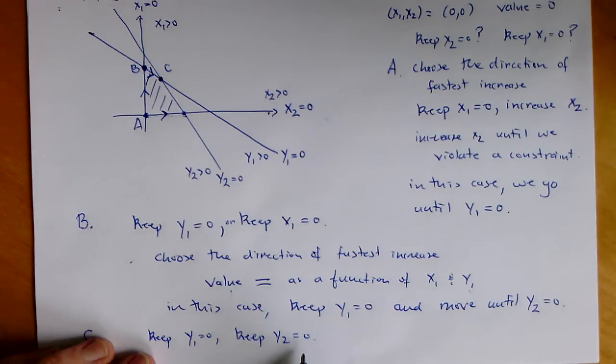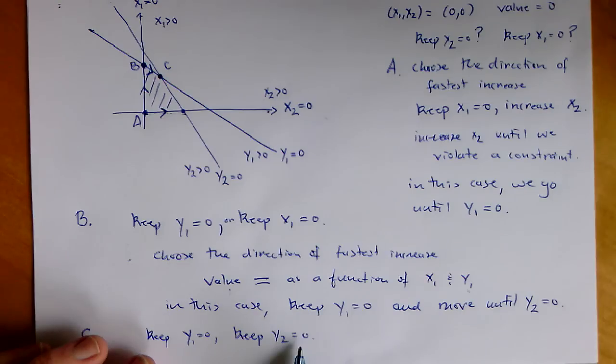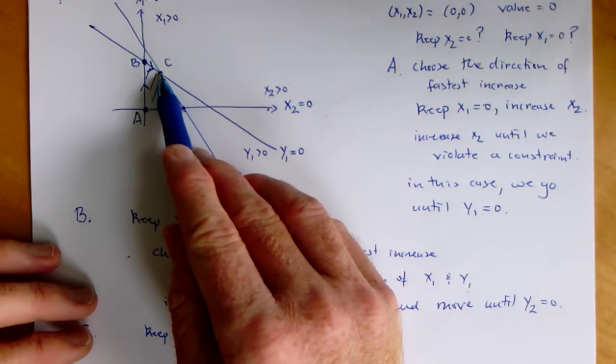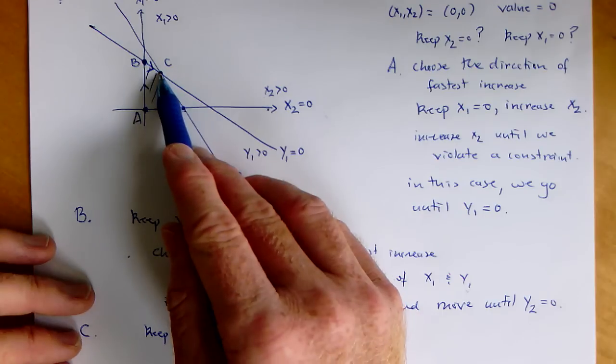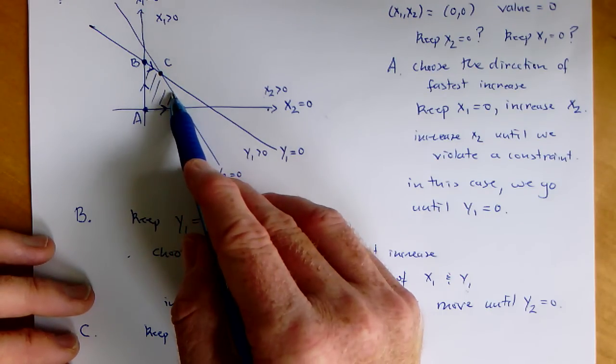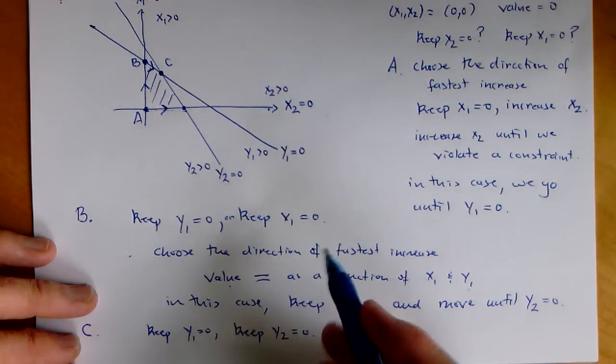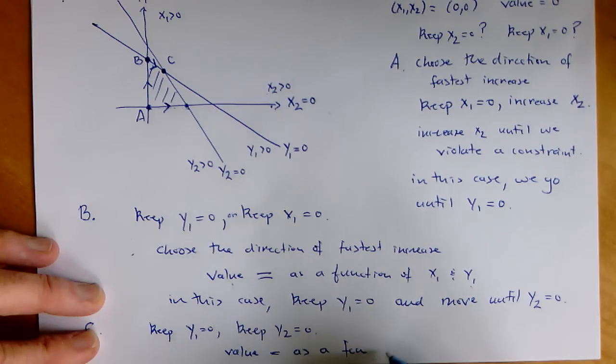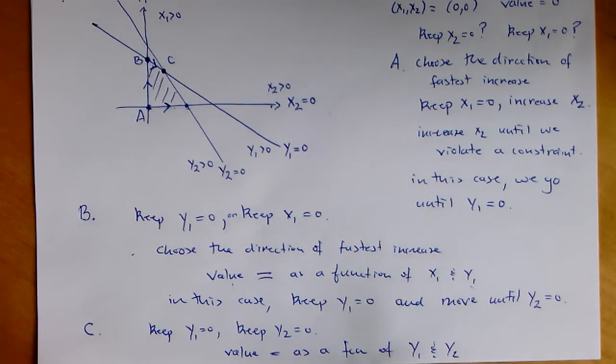At point C, we have y1 equal to zero and we have y2 equal to zero. Now, if I think about that as my key coordinates, I'm going to move along one of those axes. So I'm either going to keep y1 equal to zero or y2 equal to zero. But we can see geometrically that there's nowhere left to move. If I move along y2 equal to zero, I'm going to decrease. We would see that by, again, expressing the value as a function of y1 and y2. When we do that, we see that whatever we do to y1 and y2, in terms of increasing those values, the function value is going to decrease and we know we're done.